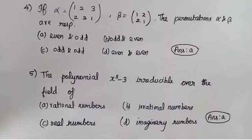And fifth question. The polynomial x cube minus 3 is irreducible over the field of... in the field. X cube minus 3 is irreducible over the field of Q. That's why we don't have a solution in Q. That's why the option is rational numbers. So the answer is option A.